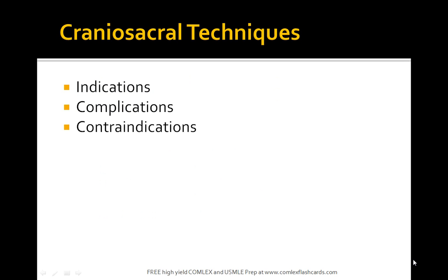Let's talk about craniosacral techniques. What are the indications for craniosacral treatment? Any sort of an SBS strain is really an indication, whether it's a lateral strain, a vertical strain, or a side bending torsion. Any strain on the SBS where the sphenoid and the occiput have some sort of strain, where one of the bones changes its position and there's mobility in one of those joints, is an indication for craniosacral techniques.